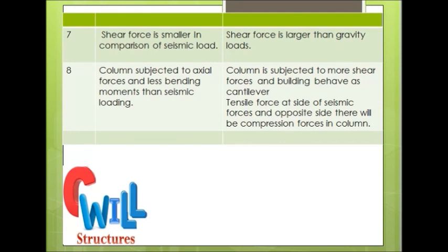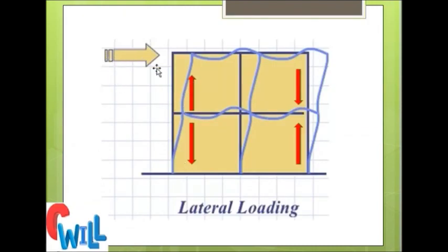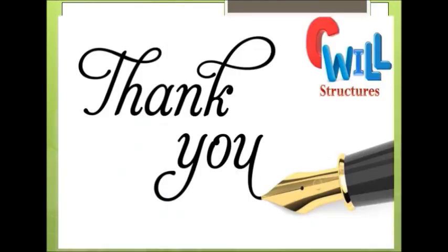Under gravity loading, columns are subjected to axial forces and less bending moment compared to seismic loading. When a column is under lateral load, it suffers more shear force and the building behaves as a vertical cantilever. Tensile force is generated on the side where the seismic force acts, and on the opposite side compression is generated in the column, as shown in the figure. In the x-direction, where the lateral force is acting on the building, tension is generated on that side and compression on the opposite side.